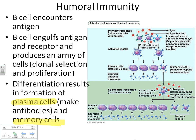Once plasma cells are made, plasma cells produce antibodies. These antibodies will specifically bind only the original antigen that activated the B cell — they are specific for that infection. There may be another B cell that finds a different piece of bacteria, makes plasma cells, and makes antibodies, but those antibodies are specific for the original antigen that activated that particular B cell.